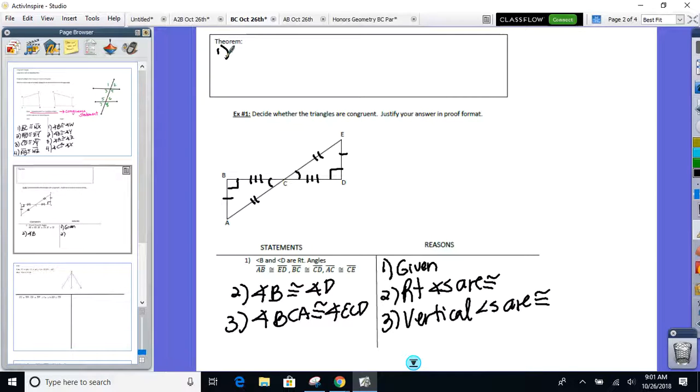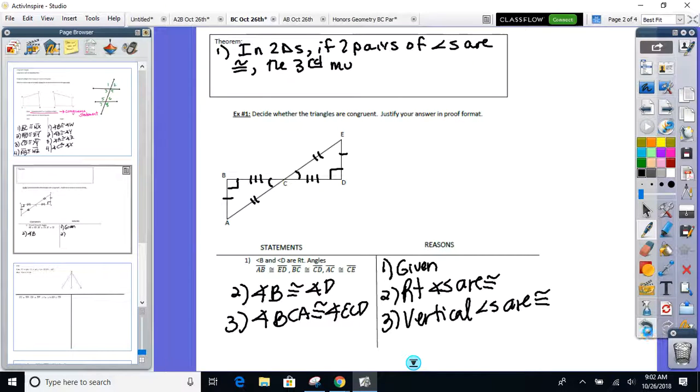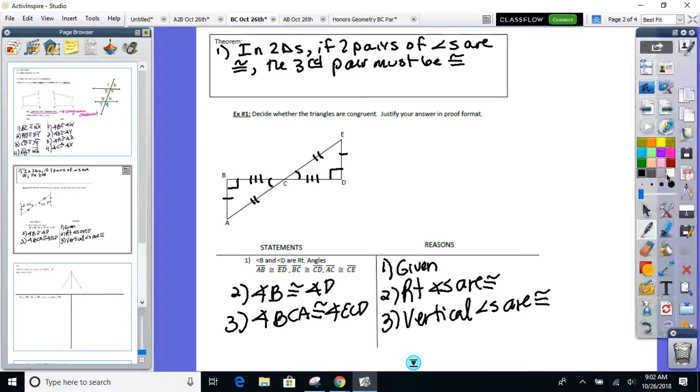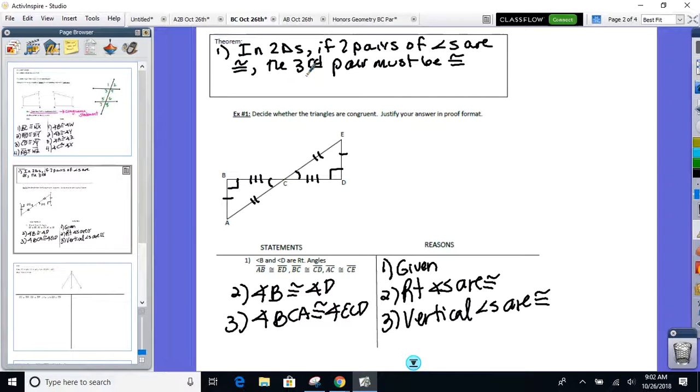In two triangles, if two pairs of angles are congruent, the third pair must be congruent. Now, I know it's going through some of your head as you're writing this down. I am not writing this down every time I need to use this. This is ridiculous. I don't blame you. I'm the same way. So we're going to shorten this and call this the third angles theorem.